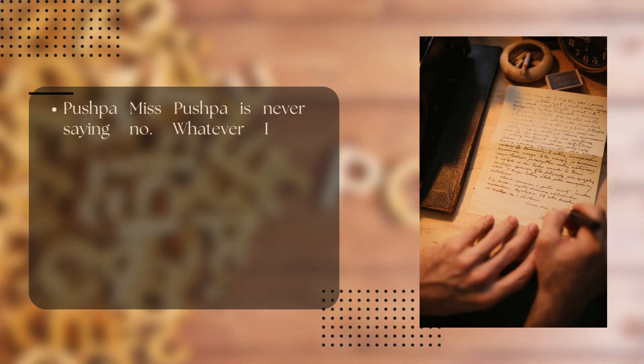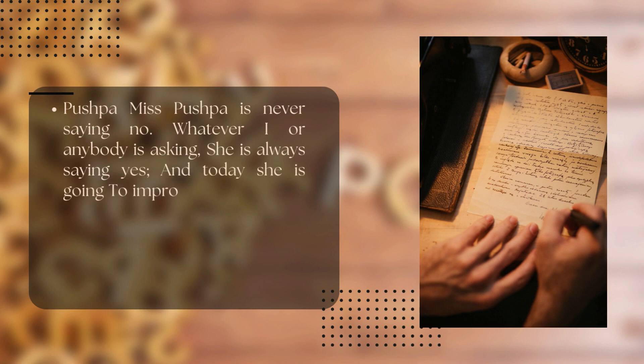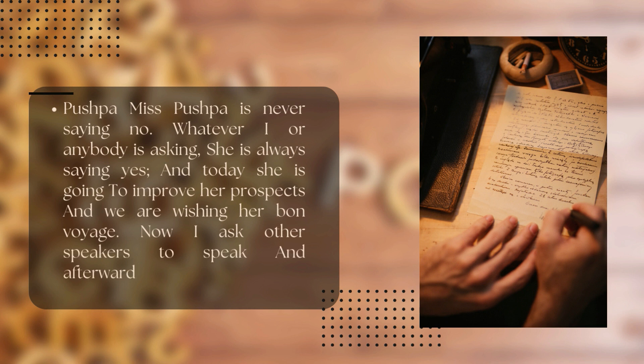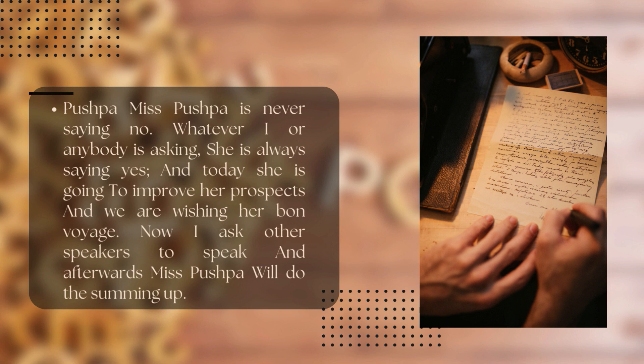The poem has two voices rendered by a single character — a first and second voice — that interweave with each other to create the personae of the poem. I would also like to read another poem by Nissim Ezekiel: 'Miss Puspa is never saying no, whatever I say or anybody is asking. She is always saying yes, and today she is going to improve her prospects and we are wishing her bon voyage. Now I ask another speaker to speak and afterwards Miss Puspa will do the summing up.'